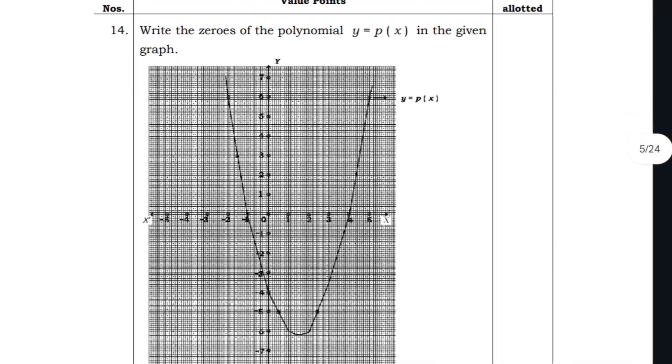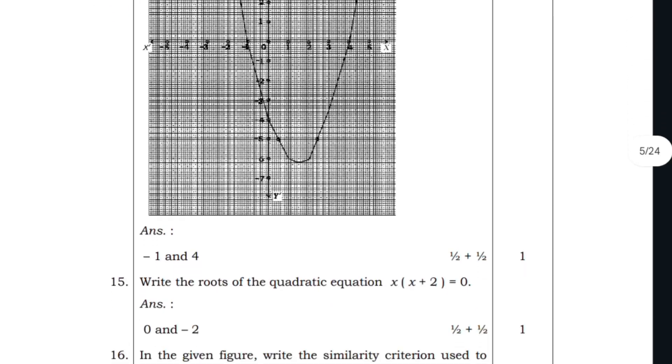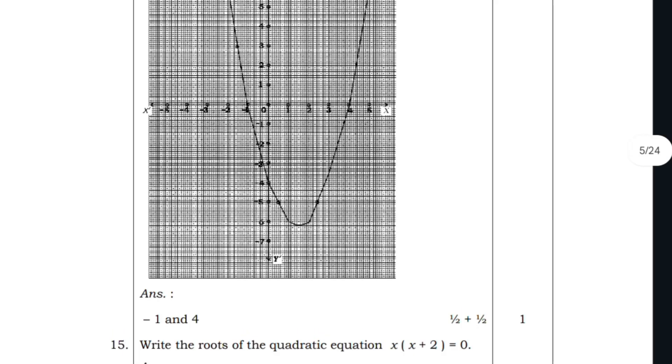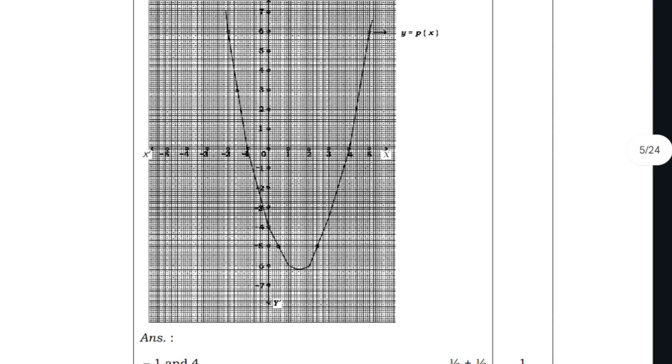This is a fixed question they will ask for many times every year. When y equals p of x means how many points are touching x axis. In p of x, go through that variable - here it only touched at minus 1 and 4. As you can see, minus 1 and positive 4 on the x axis. If it is p of x, count x points; if it is p of y, then you should count the y touching points.